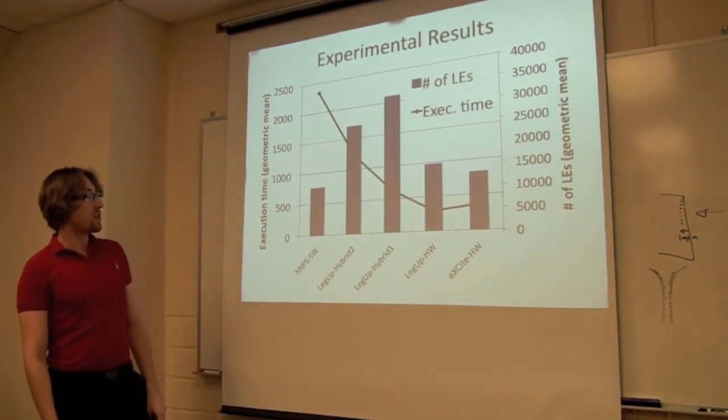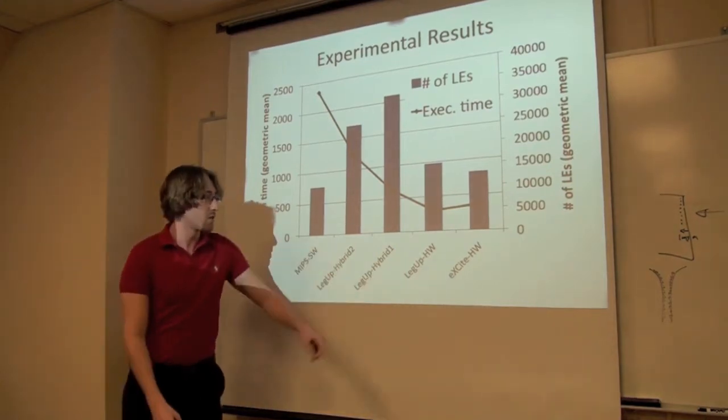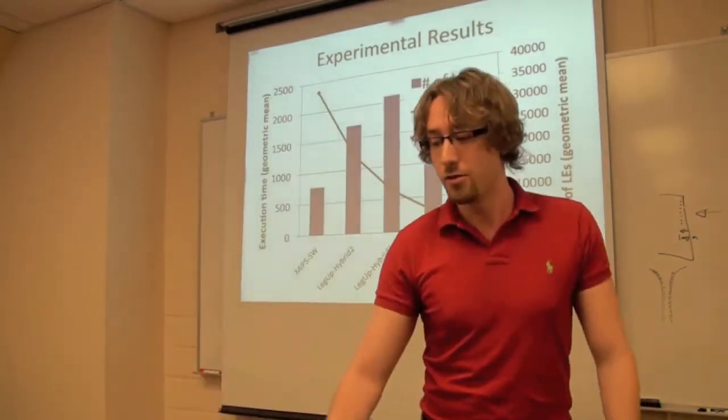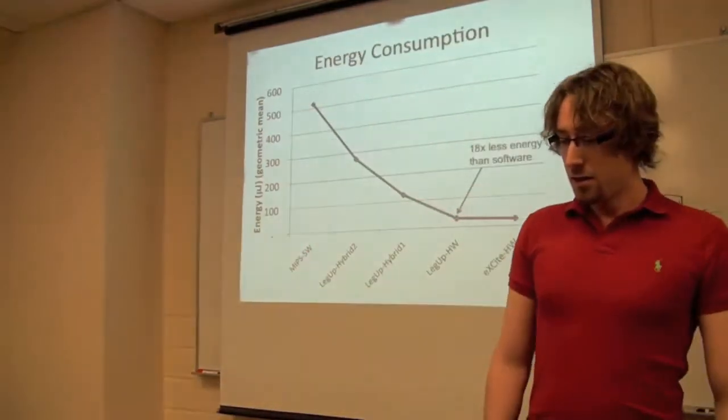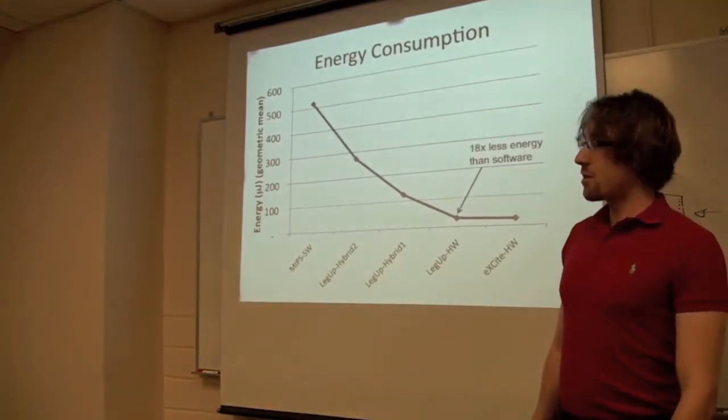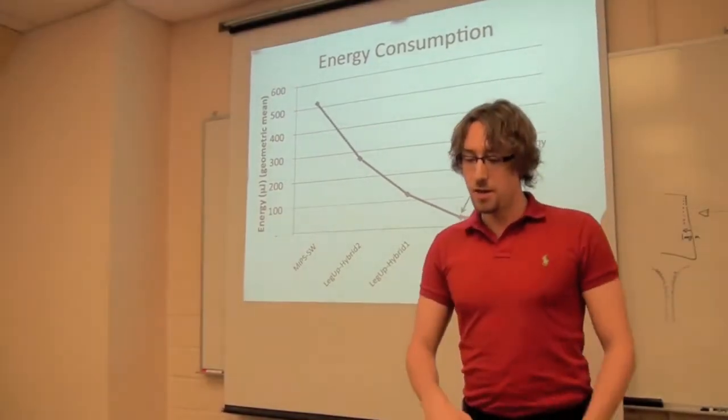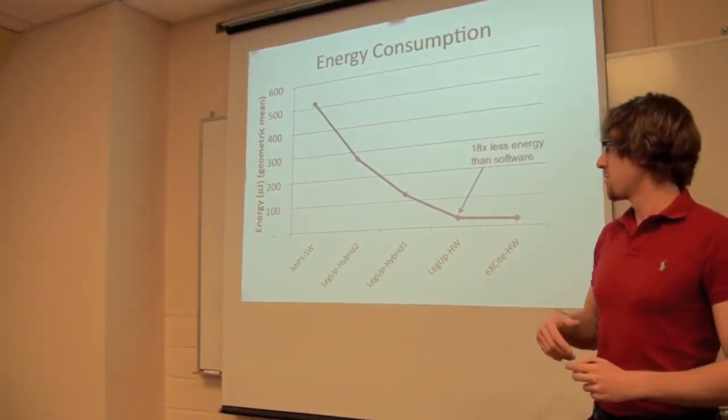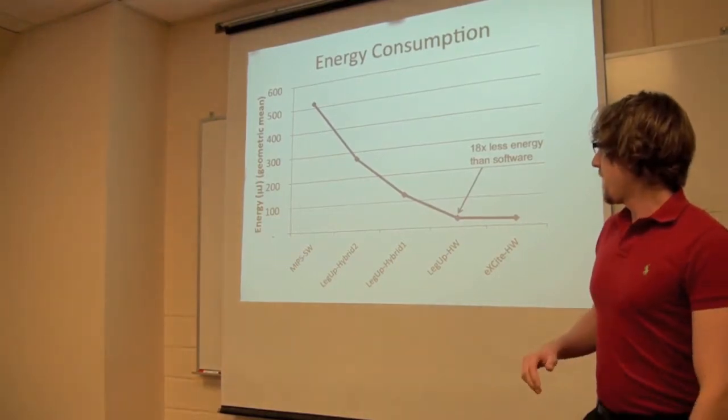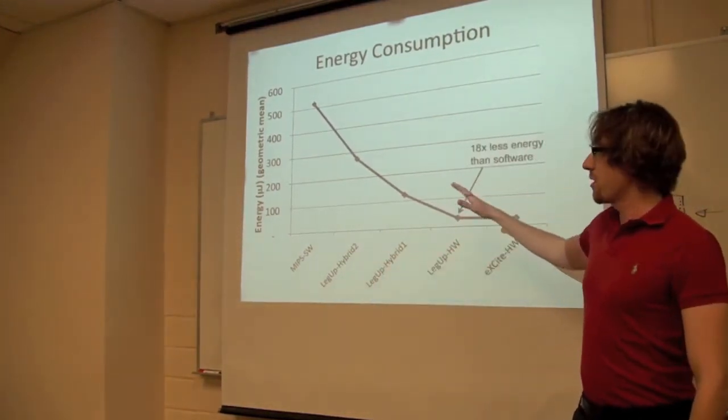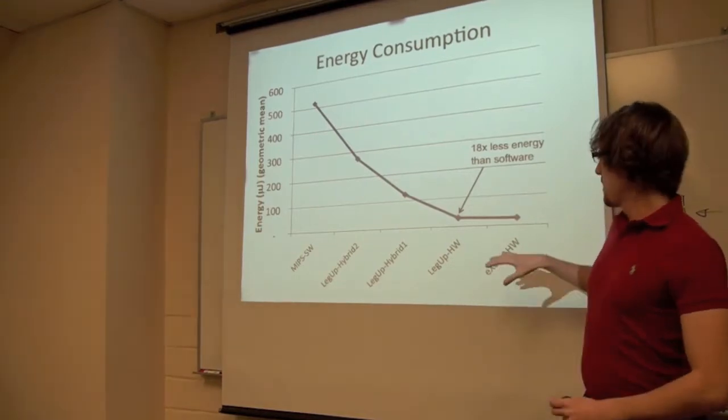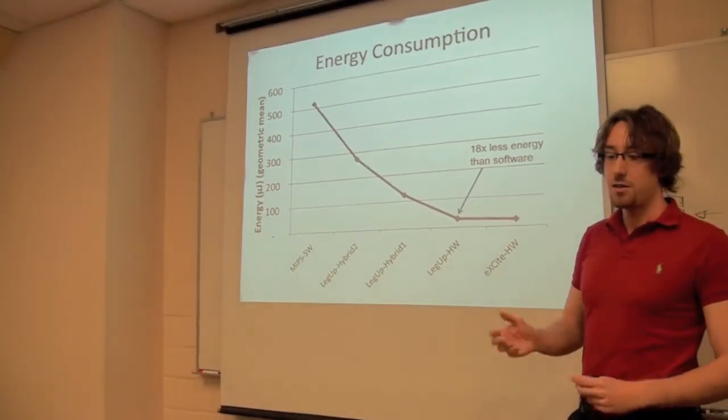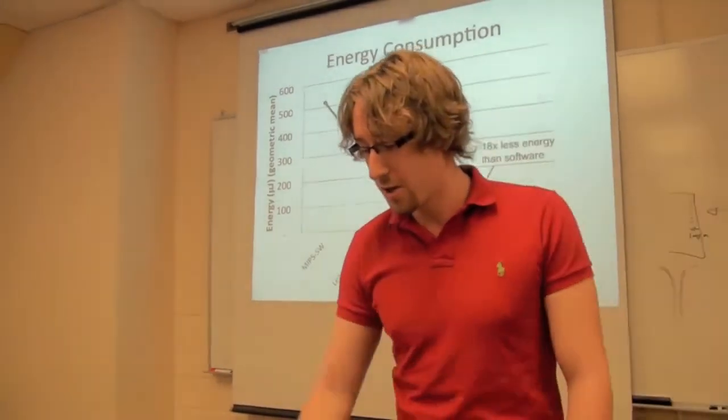The execution time for the pure hardware solution is about eight times faster than pure software. On average like geo mean average over the benchmarks. Another interesting graph to look at is the energy consumption consumed by the benchmarks. We got this by just doing a full timing post routed simulation and running it through Quartus power analysis. As you can see as you go from software to full hardware your energy drops dramatically. In the extreme case where you're in pure hardware you get about 18x less energy than a software implementation. So the energy results are pretty compelling.